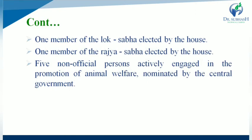Additionally: one member of Lok Sabha, elected by the house; one member of Rajya Sabha, elected by the house; and five non-official persons actively engaged in the promotion of animal welfare, nominated by the Central Government — bringing the total to fifteen members.